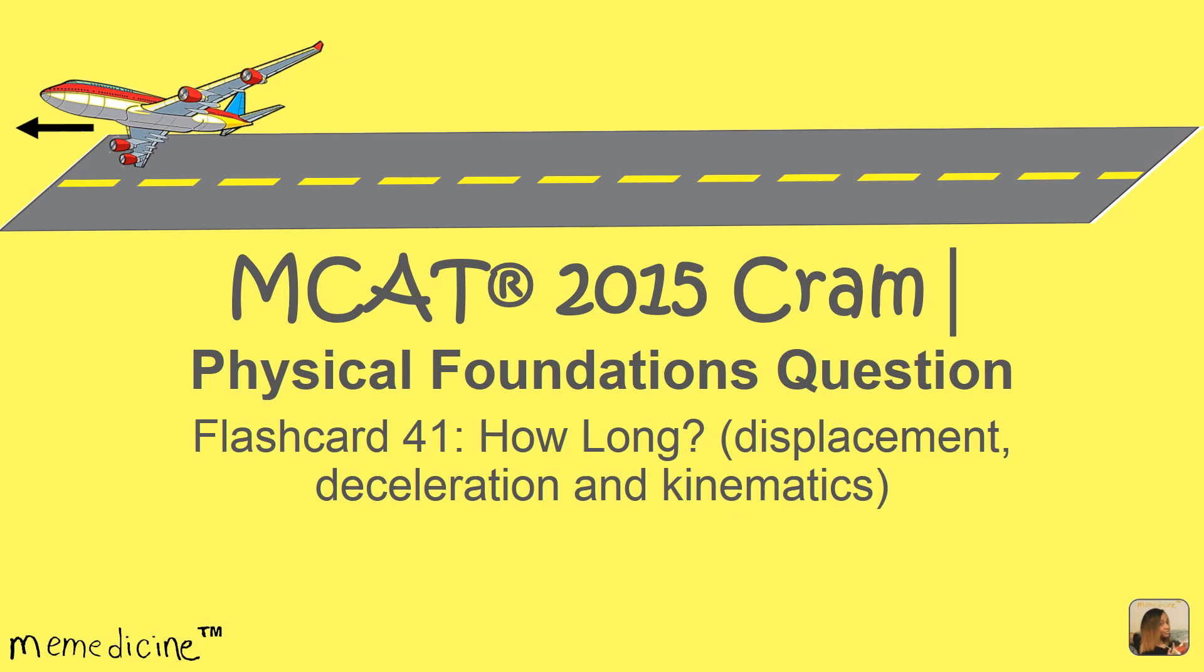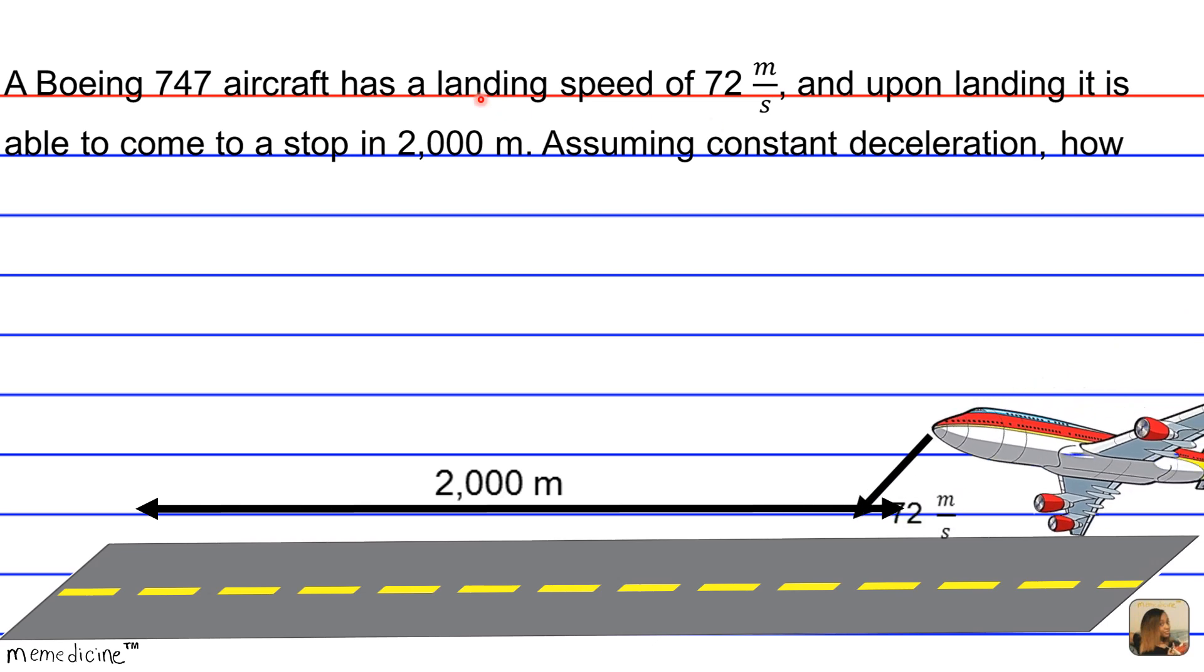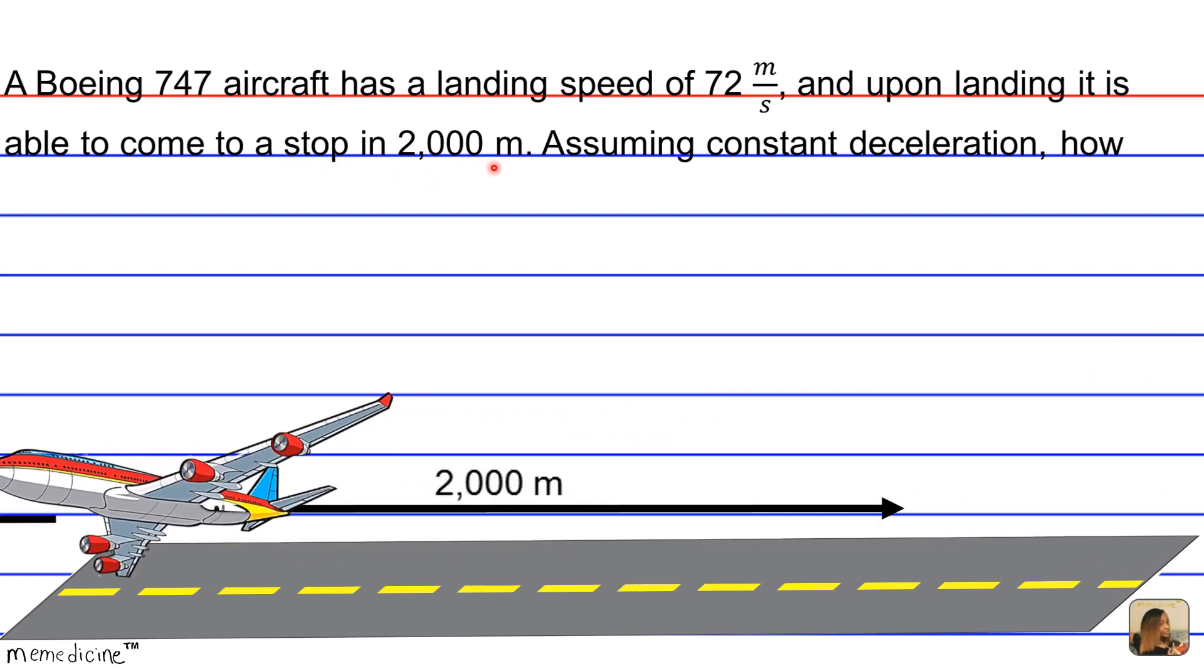Alright, let's get into the question. A Boeing 747 aircraft has a landing speed of 72 meters per second, and upon landing, it is able to come to a stop in 2,000 meters. Assuming constant deceleration, how long would it take the Boeing 747 to come to this full stop?